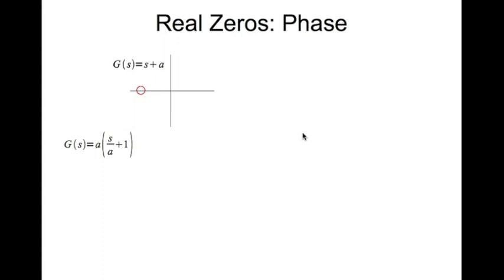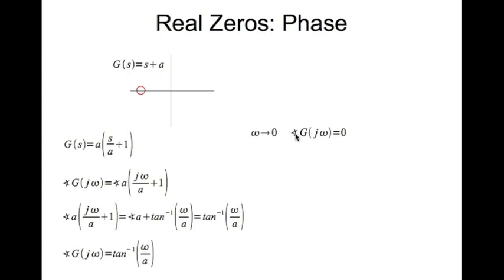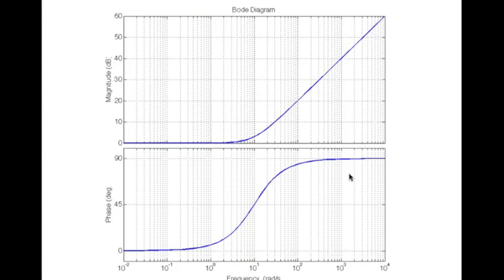Now let's look at the phase, or the angle, of the real zero. We can write the transfer function like so and take the angle on both sides. The angle of the entire expression is the angle of 'a' plus the angle of the remaining part. Since 'a' is a positive real number, its angle is zero. The angle of the remaining part is tan-inverse of omega divided by a. So the angle of a real zero is tan-inverse of omega divided by a. As omega tends to zero, the phase tends to zero; at omega equal to a, the angle tends to 45 degrees; and when omega tends to infinity, the angle of the real zero tends to 90 degrees. This is the actual Bode diagram.